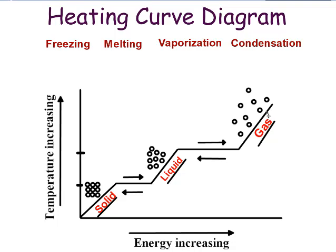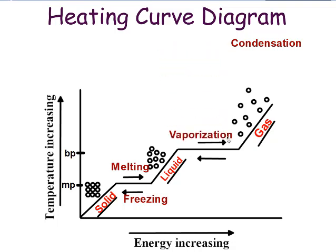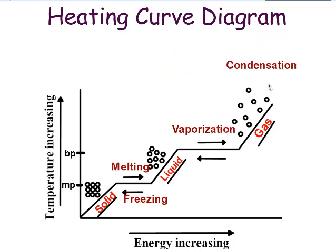On the plateaus, that's where your phase changes are occurring. Make sure that you make a note that this first plateau is our melting point. The melting point corresponds to the first plateau, and then our boiling point corresponds to the second plateau. If you're going from a solid to a liquid, that would be melting, and then liquid to solid is freezing. Notice the temperature is remaining constant while it's undergoing a phase change. And then liquid to gas is vaporization, and then gas to liquid is condensation.